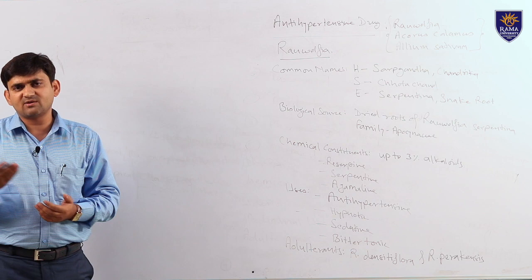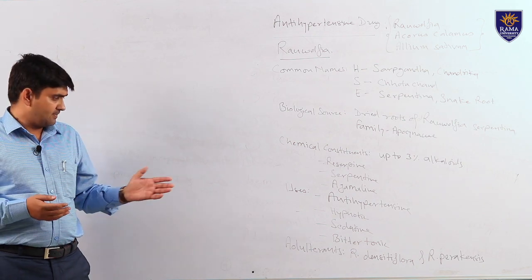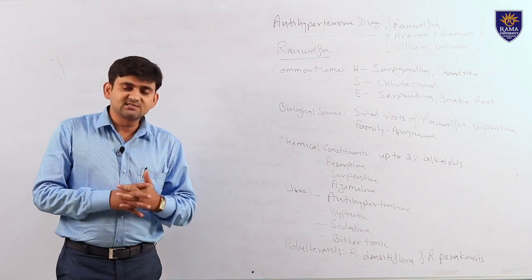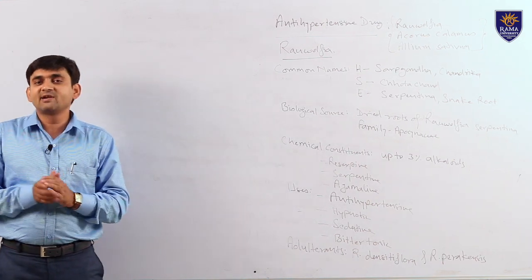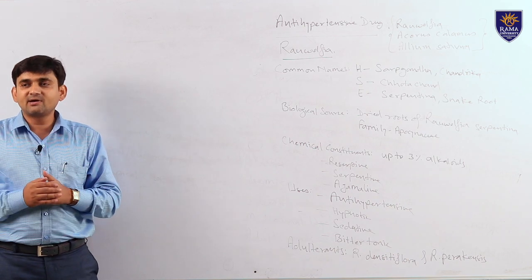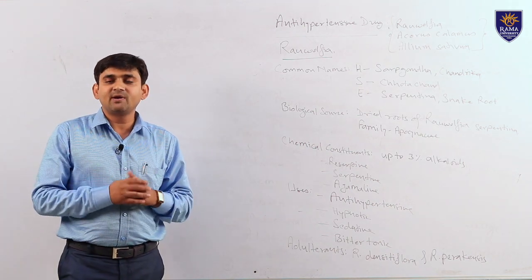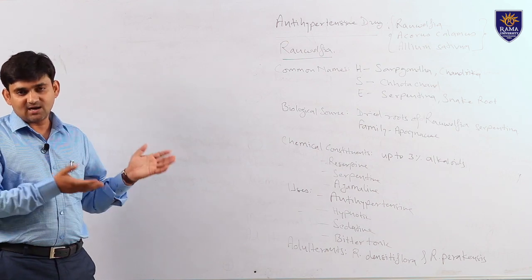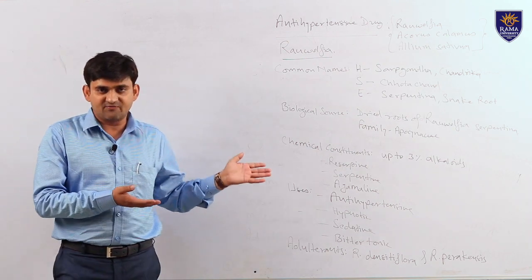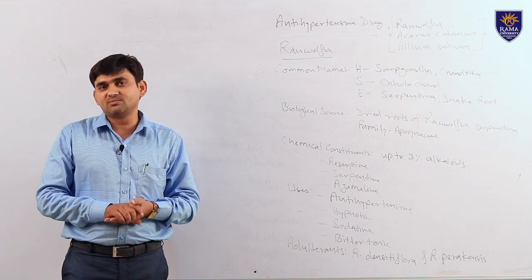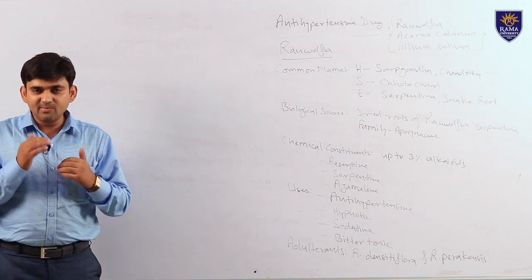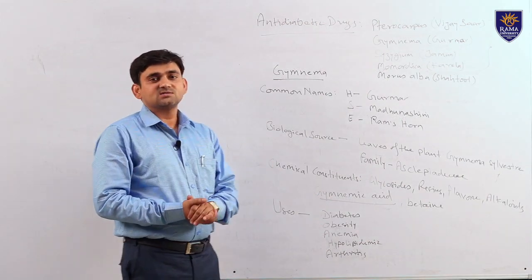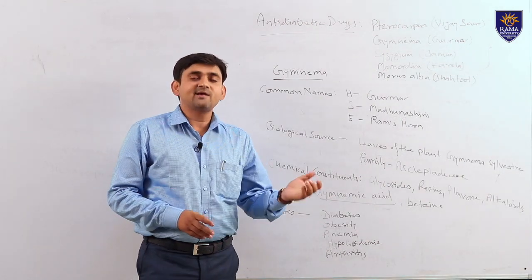Two allied drugs are used in place of Rauwolfia: Rauwolfia densiflora and Rauwolfia perakensis. These two drugs are devoid of reserpine — reserpine content is nil in these two drugs. But they are allied species of Rauwolfia serpentina and due to morphological similarity, they are admixed with the main drug. Now we will discuss the next category of drug: antidiabetic drugs.